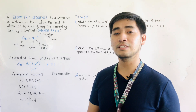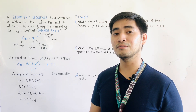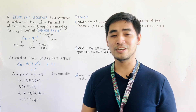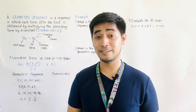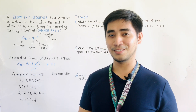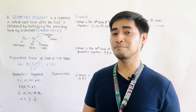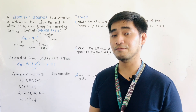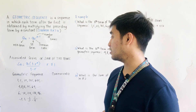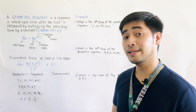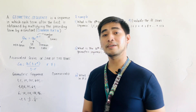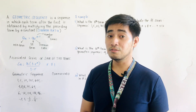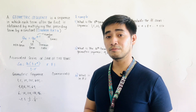If we're asked to get the associated series or the sum of the terms of the geometric sequence, the formula is SN is equal to A1 times 1 minus R raised to N, all over 1 minus R. Where R should not be equal to 1, because the denominator will be 0.